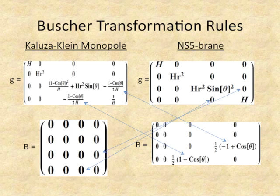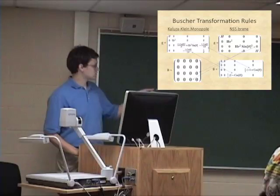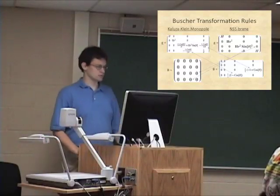You may notice some similarities between the matrices for the NS5 brane and the Kaluza-Klein monopole. The arrows indicate what terms are switched between the two, and they all come from that extra dimension. Down here we have the one-half times one-minus-cosine-theta term, which corresponds to a term in the monopole, and in the NS5 brane we're switching zeros for the B field. This nice correspondence is what makes them T-dual, and you can transform between them using Buscher transformation rules.